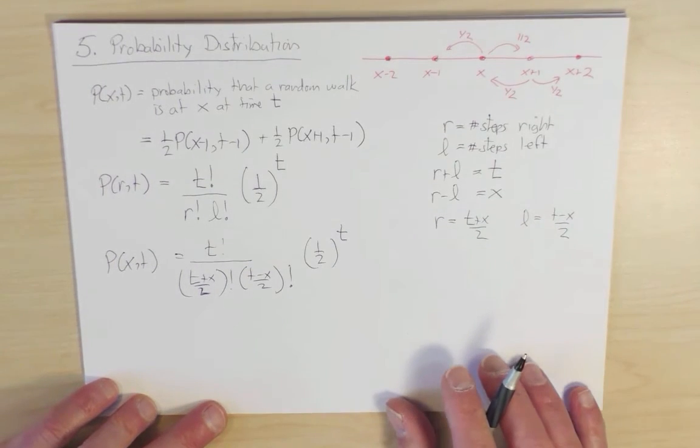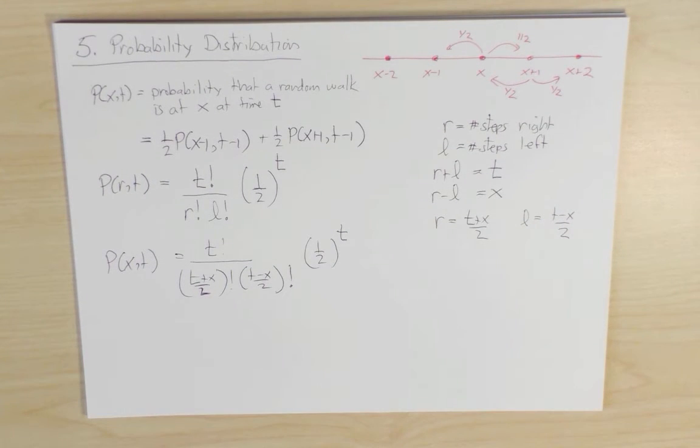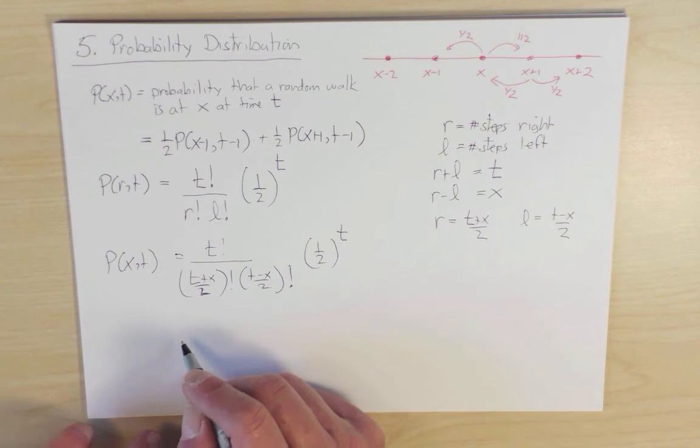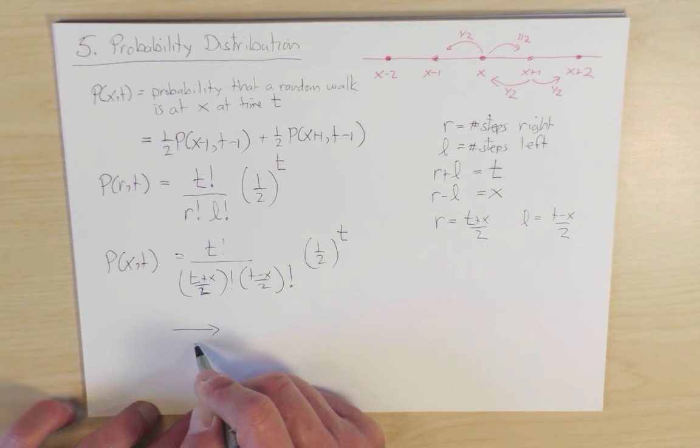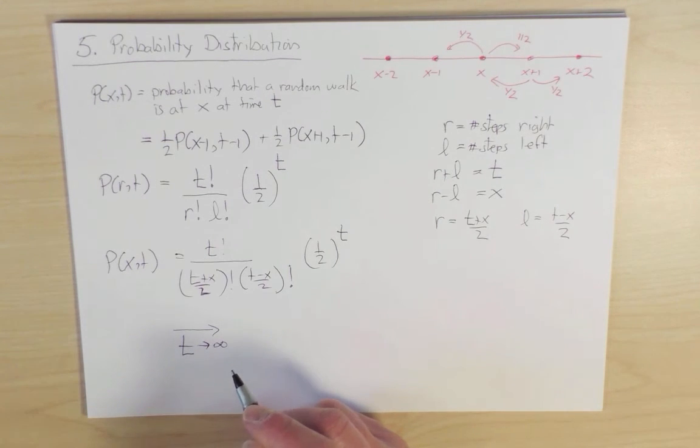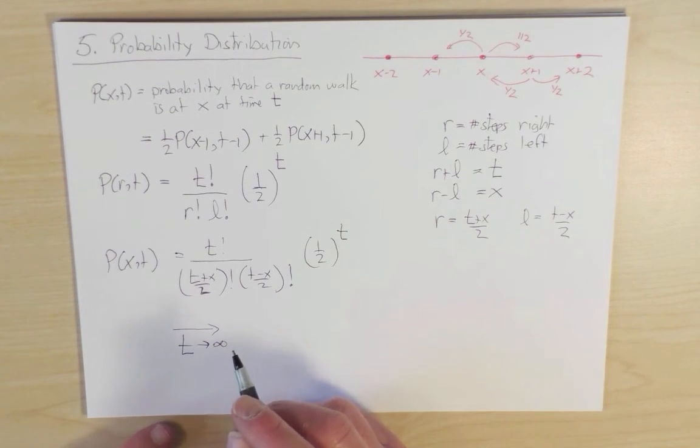Now in this discrete form, it's actually not very convenient to do any manipulations, because it's discrete and we can't use the power of calculus. And so in general, one wants to find this probability distribution in the limit of t going to infinity. And in this long time limit, we can use Stirling's approximation to reduce the factorials to analytic functions.